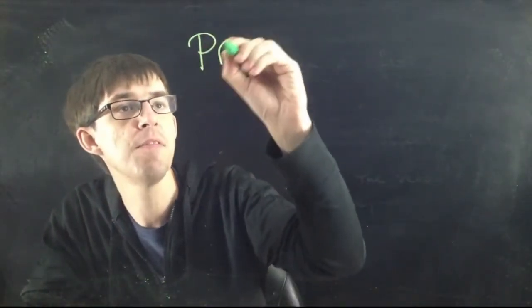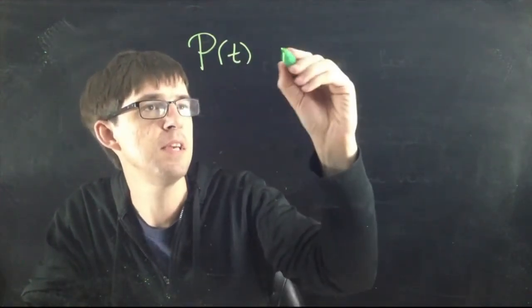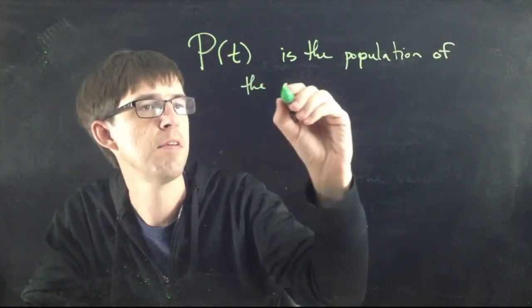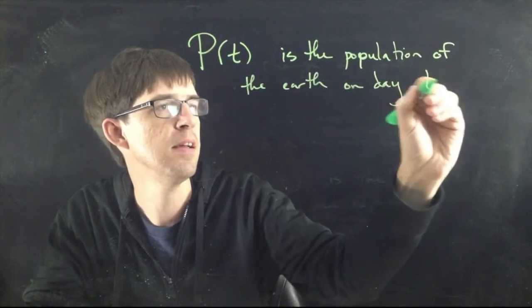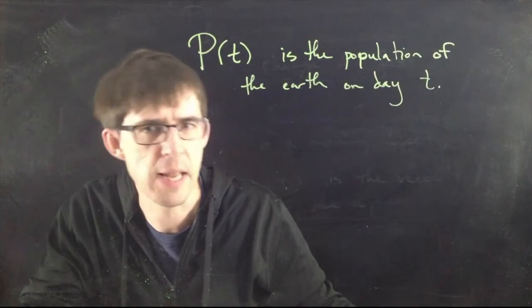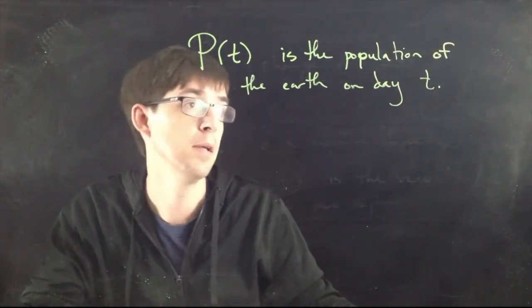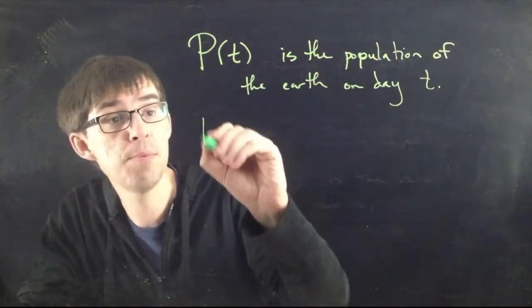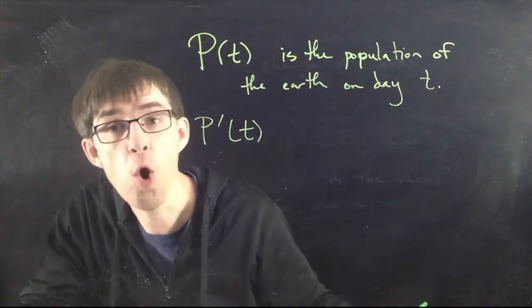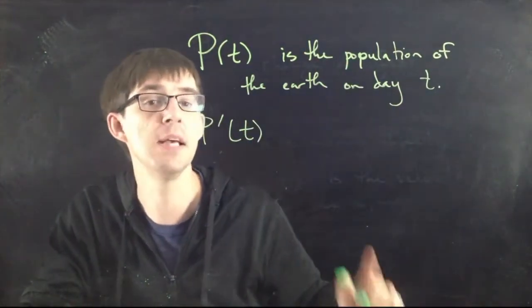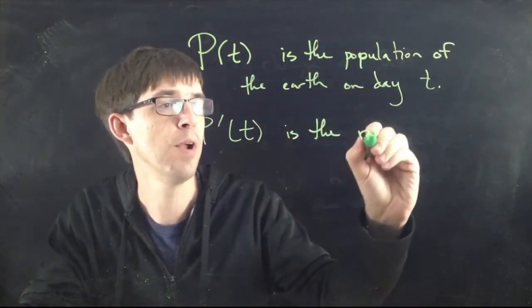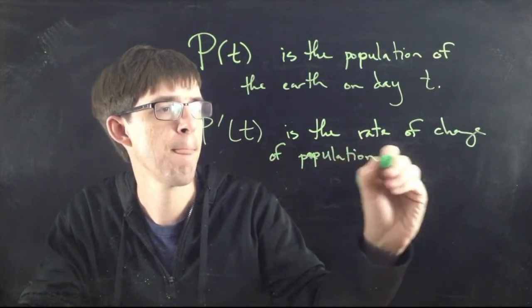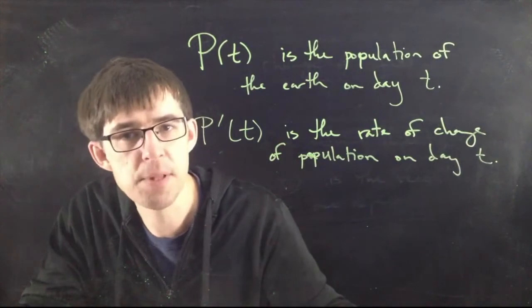Another totally different example. How about this? What if I have P(t) is a function? Let's say P(t) is the population, let's say of the earth on day t. Every day the earth has a population. I suppose these days the population is increasing day to day. Some people die, but other people are born and there's more people born than die every day. So P(t) is the population of the earth, let's say on day t. What does P'(t) represent? The derivative, the prime always means how fast is the original thing changing? So P'(t) in this case represents the rate of change of population on day t, how fast the population is changing on each day.